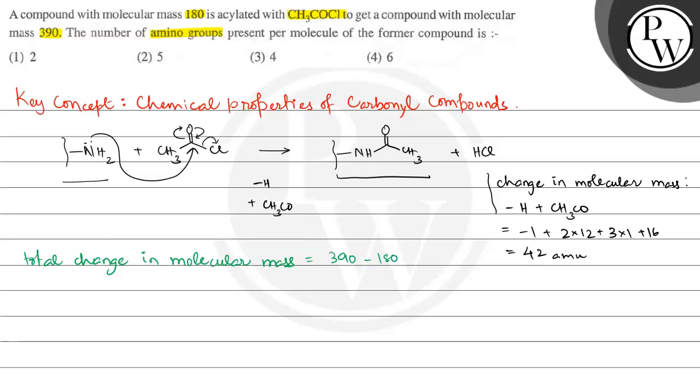And this is equal to 210. Now, for one amino group there's a 42 amu change, and this compound has a total change of 210 amu. So we can calculate the number of amino groups from this.